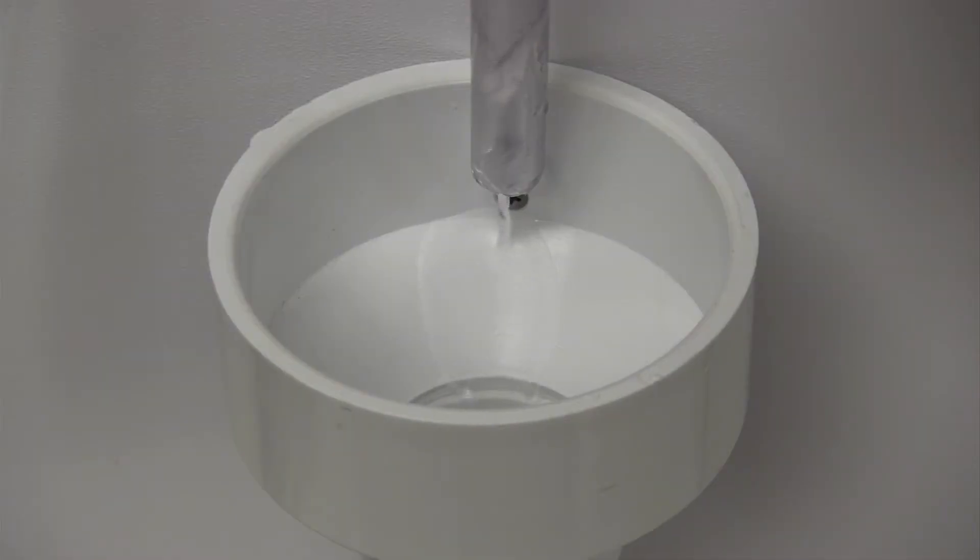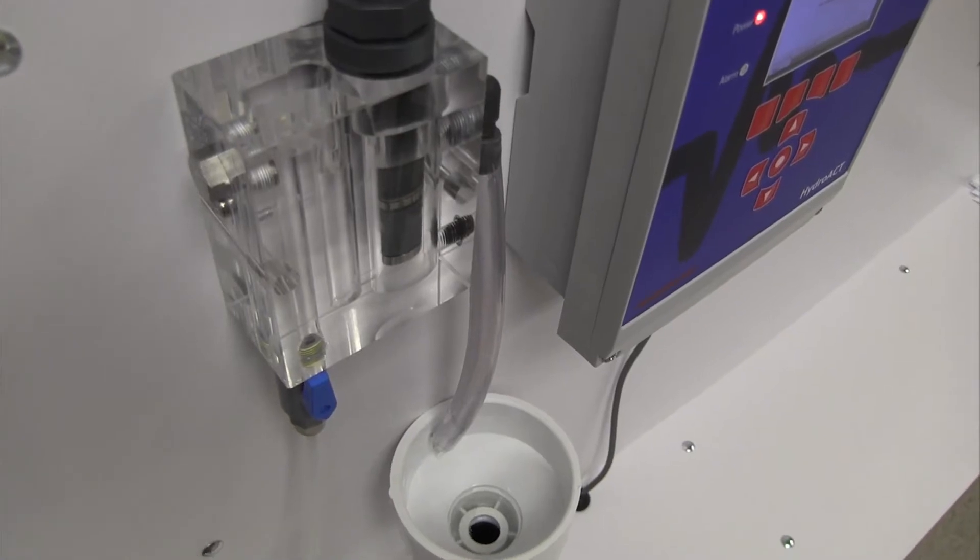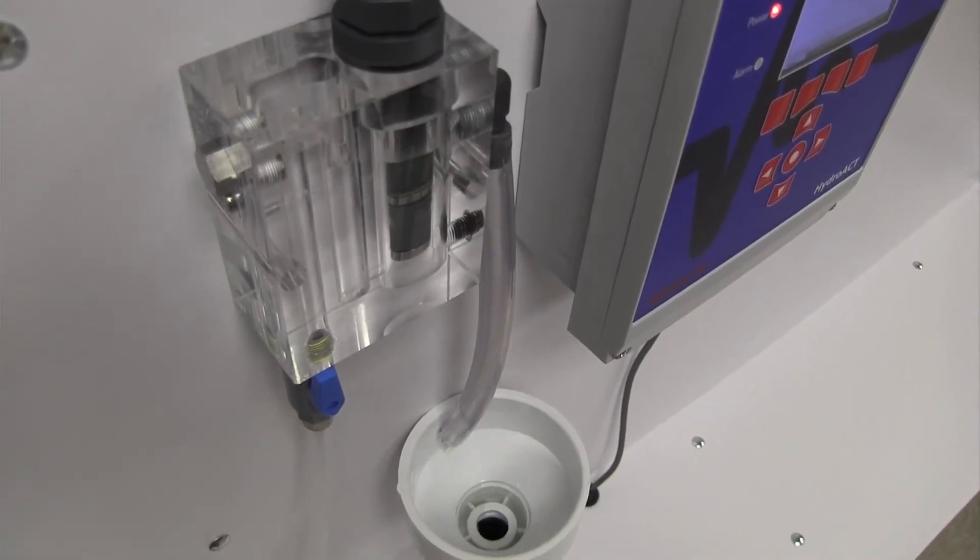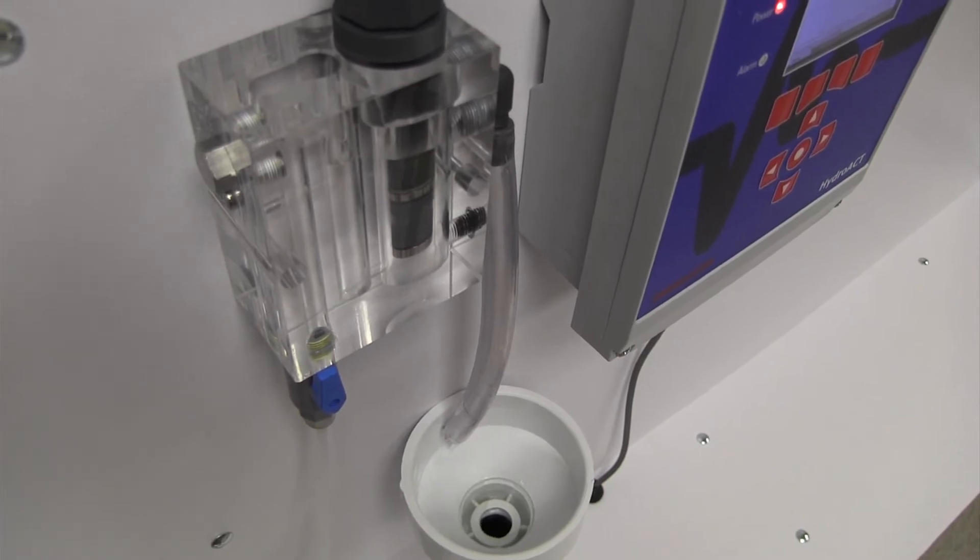The sample outlet should flow directly into an atmospheric drain. The flow cell is vented and will not achieve the proper flow rate if there is any back pressure or flow restriction caused by the drain line.